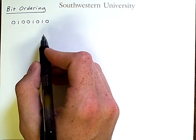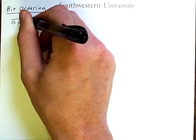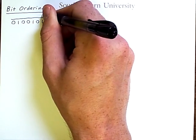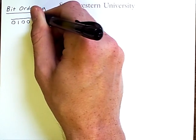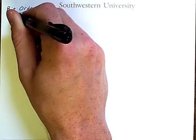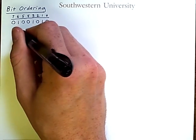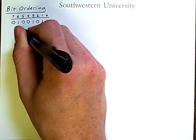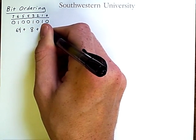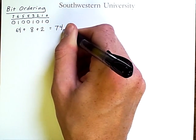Now you should have no trouble converting this to decimal as follows by noting that the exponents for these positions can be numbered like so, and then by noting where the ones occur we realize that this is 64 plus 8 plus 2 and is equal to 74 in base 10.